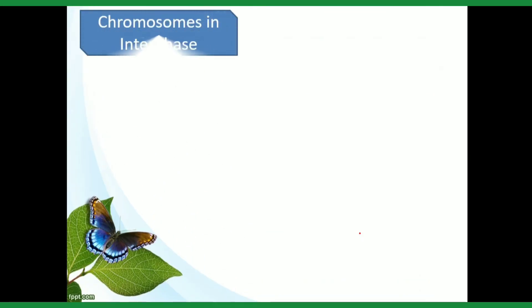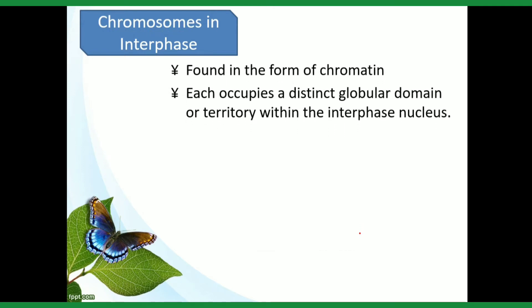Next is chromosome in interphase. We can see chromosomes in different phases of cell division. During interphase, chromosomes are found in the form of chromatin. Each copy occupies a distinct global domain or territory within the interphase nucleus.